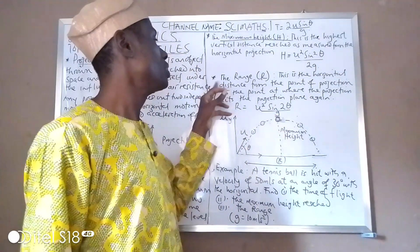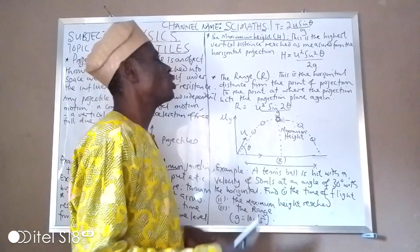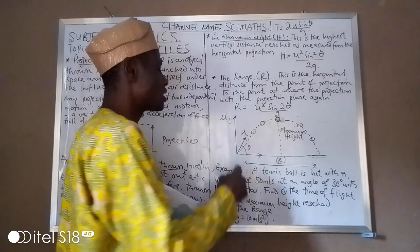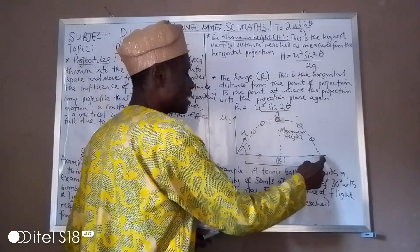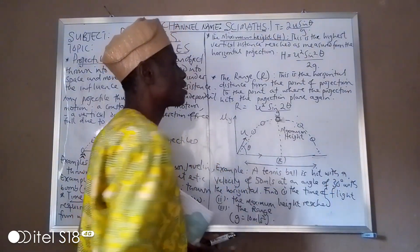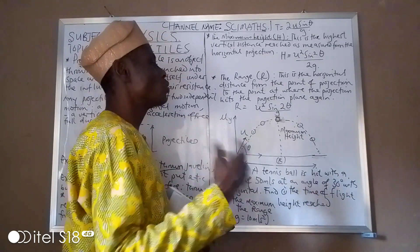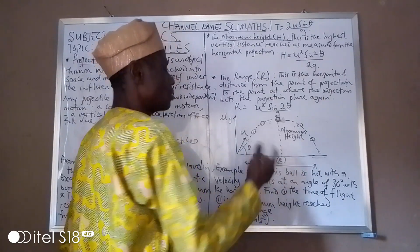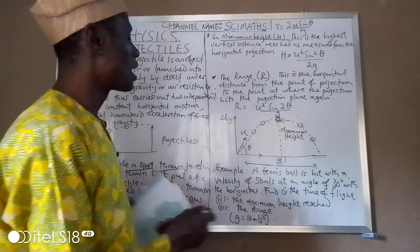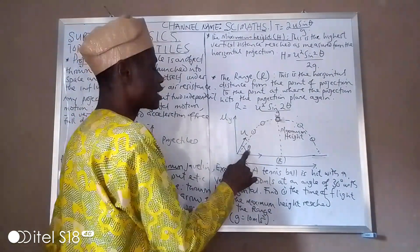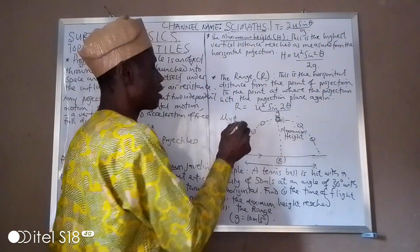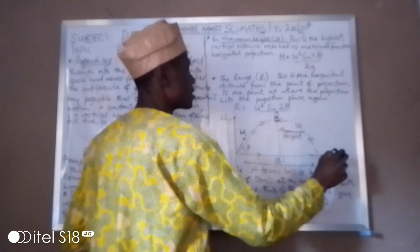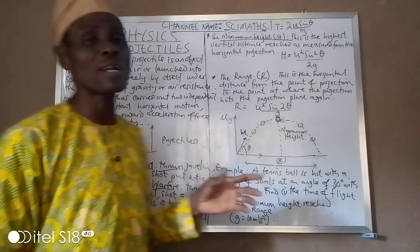The range R is the horizontal distance from the point of projection to the point where the projectile hits the projection plane again. So the distance from the launch point to where it landed is called the range R. You can see our theta here — the angle of projection — and u is the initial velocity. The projectile has two components: vertical and horizontal.